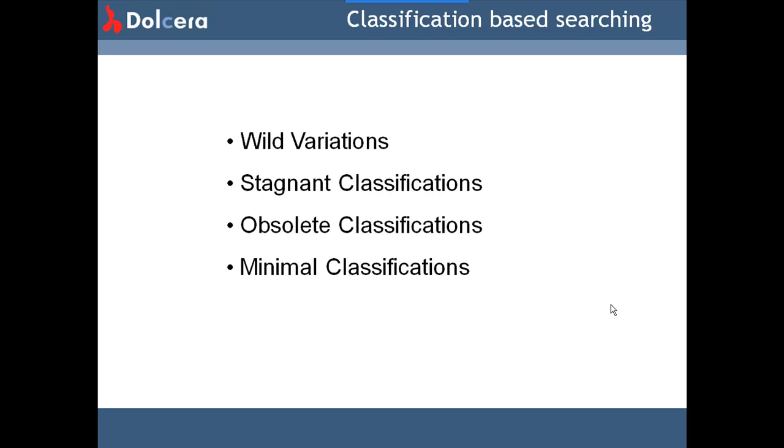Classification searching pitfalls to be kept in mind. Wild variations. The international patent classification gets a wide range of interpretations in different jurisdictions. Stagnant classification. The classifications issued by the respective patent offices are not updated regularly. However, the USPTO, IPC, and ECLA are making their best effort.